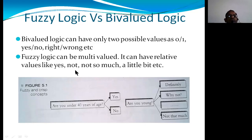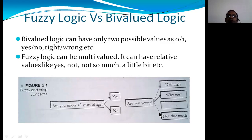Fuzzy logic can have relative values like yes, not so much, a little bit, and so on. For example, if we ask 'are you a young person?' so many answers can come. Any person whose age is between 18 and 40 could be called a young person, and so many intermediate values can exist for this classification. This is what fuzzy logic systems are meant for — to provide multi-valued outputs or multi-valued results.